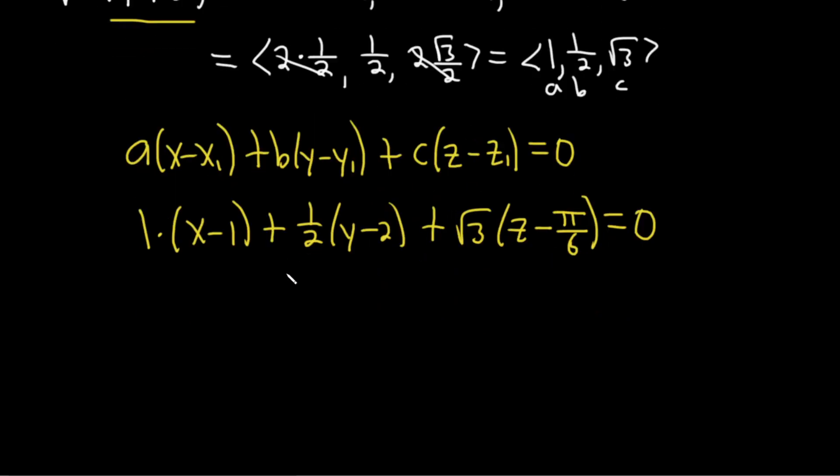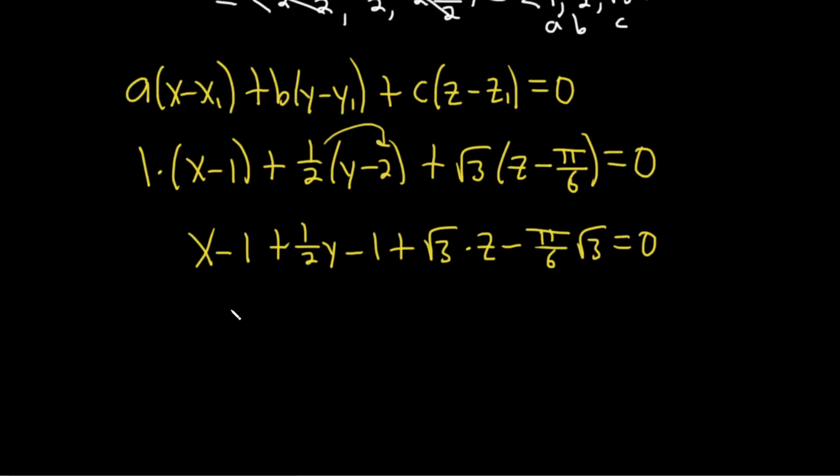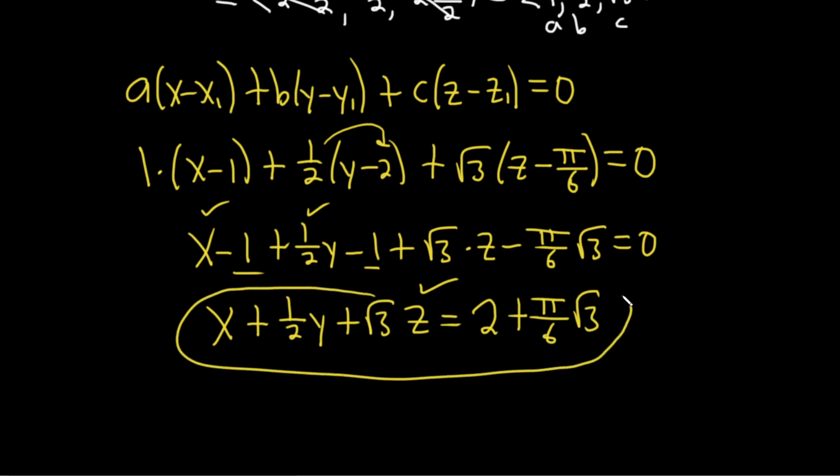And I guess we could leave it like this. We can clean it up a little bit, maybe. Let's see. x minus 1 plus, then 1 half times y is 1 half times y. And then this is minus 1 here, 1 half times negative 2. Plus square root of 3 times z minus, we'll write it like this, pi over 6, square root of 3. And that's equal to 0. Let's keep going here. We've got x plus 1 half y. Got that one, that one. And then plus the square root of 3 z. That one. And then here we have a minus 2. And we have this piece here. So I'm going to put that on the right-hand side. So 2 plus pi over 6, square root of 3. And that should be the equation of the tangent.